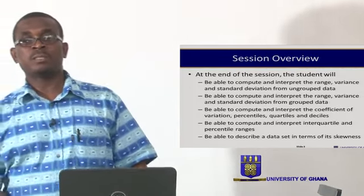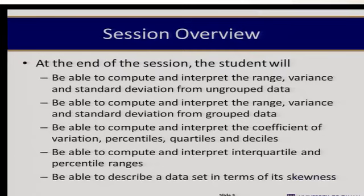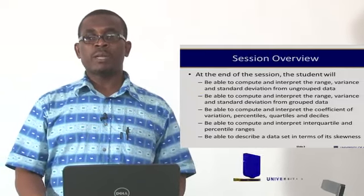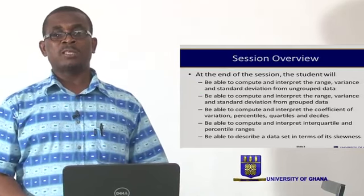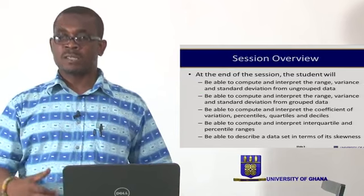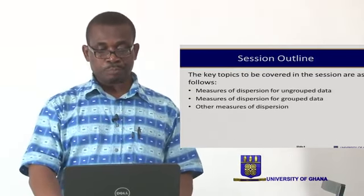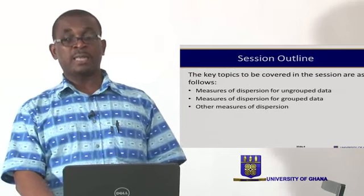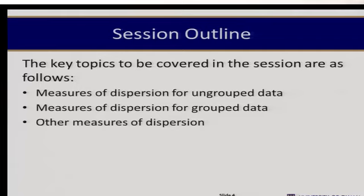At the end of the session, the student will be able to compute and interpret the range, variance, and standard deviation from grouped data as well as ungrouped data. The student will also be able to compute and interpret the coefficient of variation, compute percentiles, quartiles, and deciles, and compute and interpret the interquartile range, as well as describe the data set in terms of its skewness — that is, departure from symmetry. The session is structured under three topics: measures of dispersion for ungrouped data, measures of dispersion for grouped data, and other measures of dispersion.